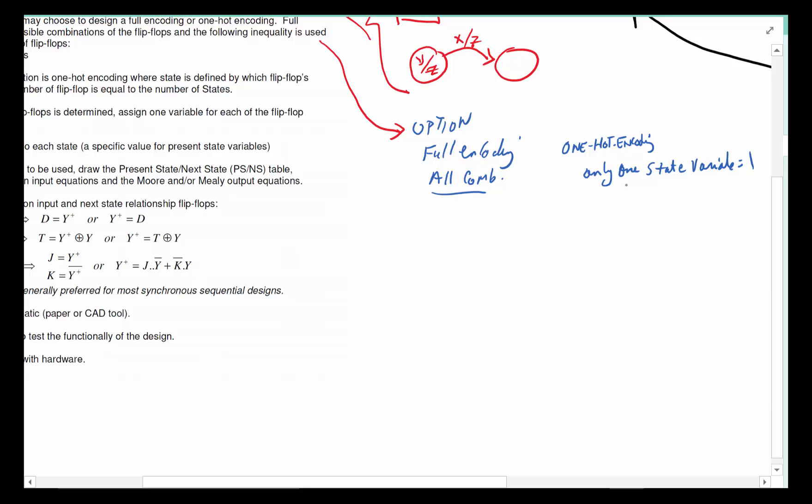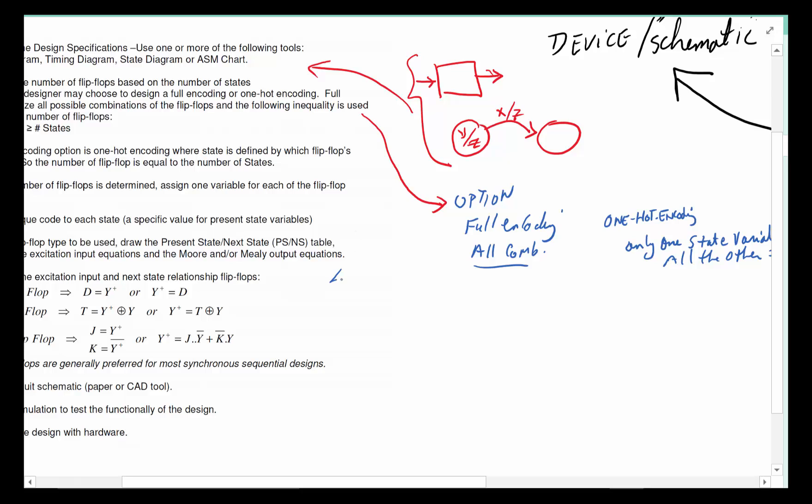One-hot only allows us to have only one flip-flop output, one state variable which is the flip-flop output, equal to one. Only one can be equal to one, everything else must be zero. So let's say we did the state diagram and we have four states as an example.